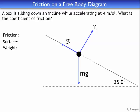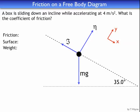Next, I need to figure out a coordinate system. I'm always going to pick a coordinate system parallel and perpendicular to the net acceleration. In the last problem I said parallel and perpendicular to the incline, but really what I'm after is parallel and perpendicular to the net acceleration — this makes the math easier. Since the box is accelerating down the incline, I'll pick parallel and perpendicular to the incline. That's very fortunate.